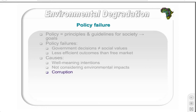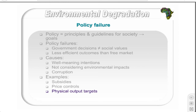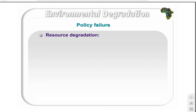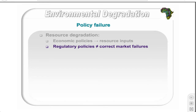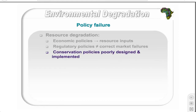Other causes include corruption, where government allows certain environmentally harmful practices for personal gain. Examples of government interventions include misplaced subsidies, price controls, physical output targets, and exchange controls. Policy failure can lead to resource degradation in three ways: economic policies may affect how individuals use resource inputs in production; regulatory policies governing natural resources may be insufficient to correct market failures; and conservation policies may be poorly designed and implemented.